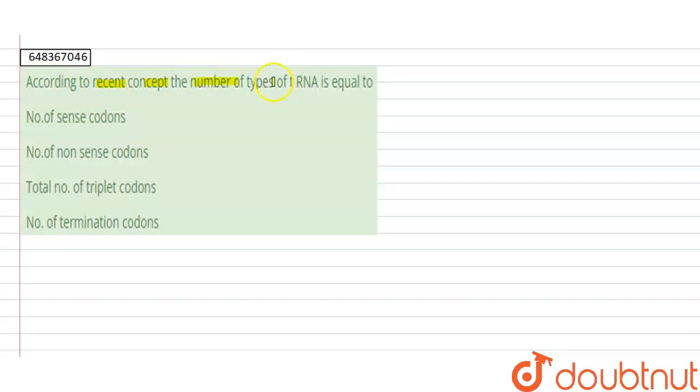The number of types of tRNA is equal to... the number of tRNA during protein synthesis.